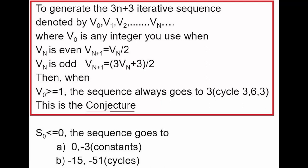When S0 is less than or equal to 0, the sequence goes to 0 and minus 3, both constants, and minus 15 and minus 51 are the cycles.